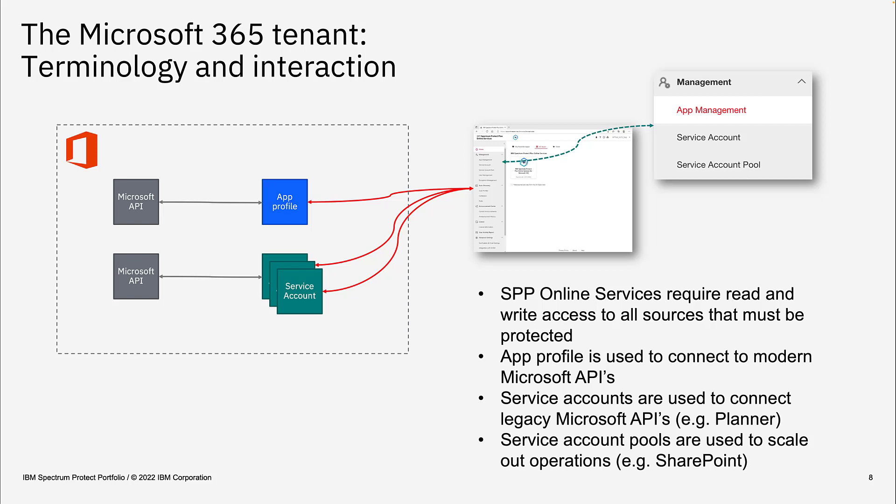Service accounts are also used to scale out the backup for larger content, for example SharePoint sites, because there can be a lot of content there. Each service account that connects to the Microsoft APIs gets throttled after some time and scale-up. To have the ability to scale out, the SPP Online Service allows using multiple service accounts working in parallel with the Microsoft APIs.